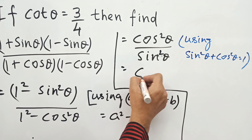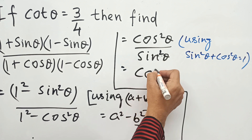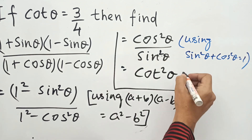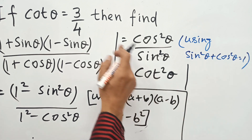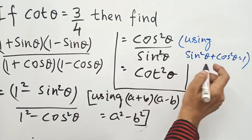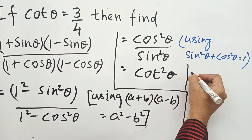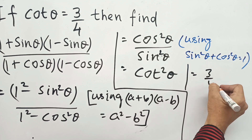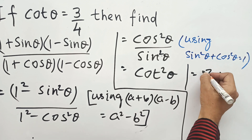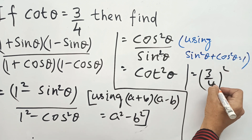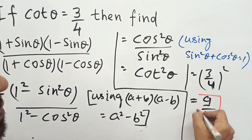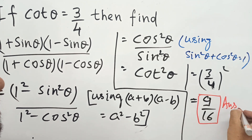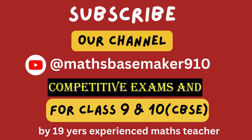So we get cos squared θ upon sin squared θ, which is cot squared θ. Now we put the given value: cos θ is 3 upon 4. So the answer is (3/4) squared, which equals 9 upon 16.